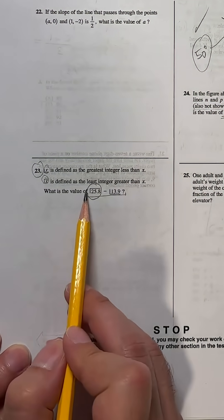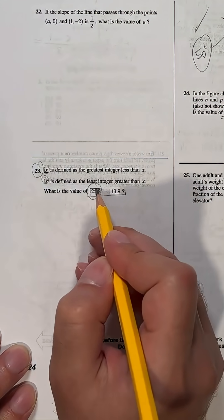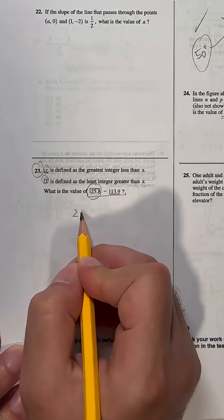Let's start with 25.8. The ceiling of 25.8 is the least integer greater than 25.8, which is 26.